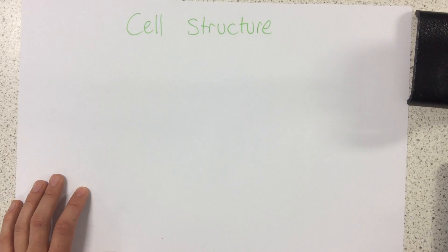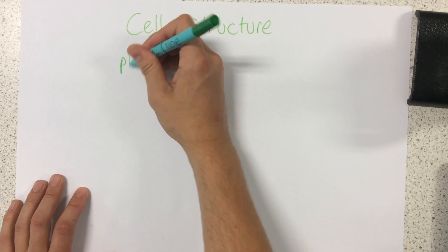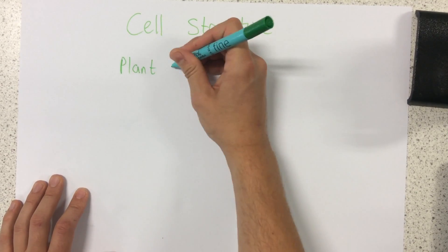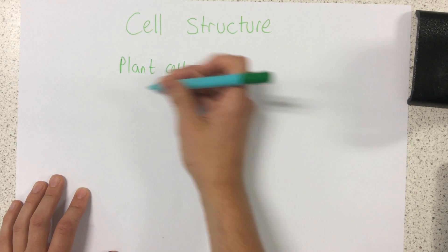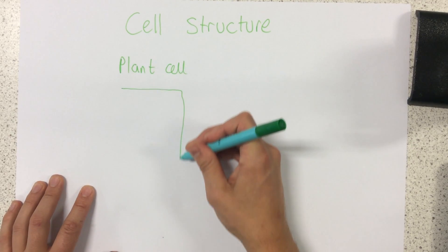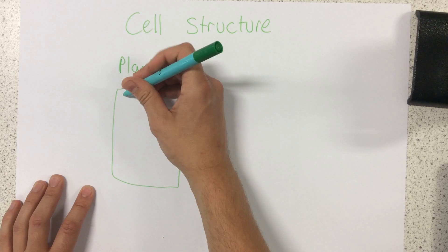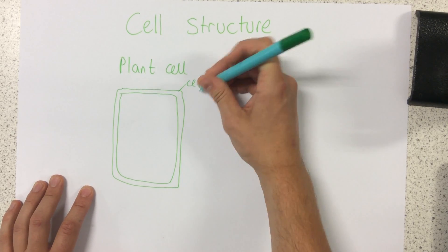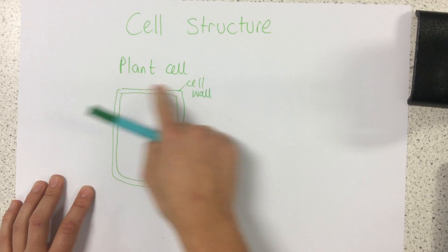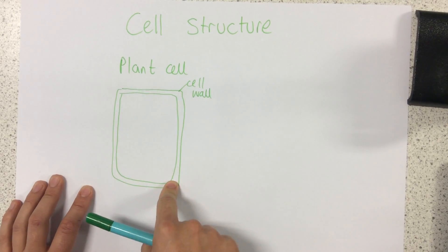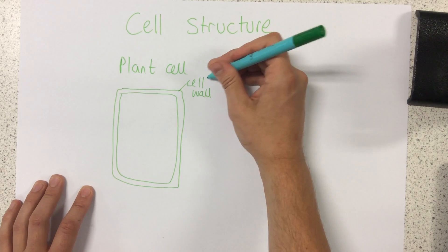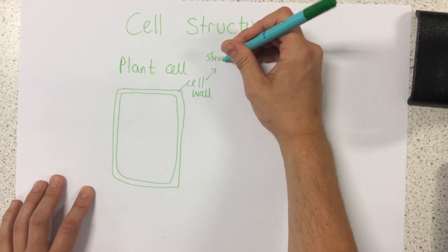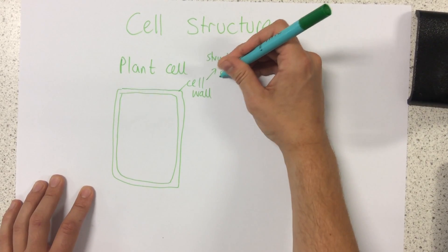So what we're going to start with is we're going to start by looking at a plant cell. So around the outside of a plant cell we have what's called a cell wall. Think of a wall going around the outside of a room. The cell wall provides structure and support.